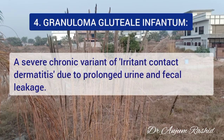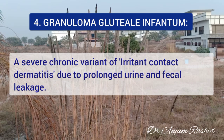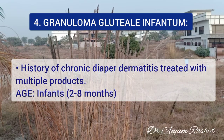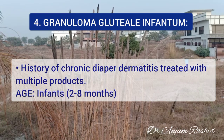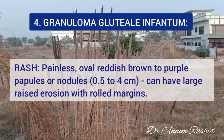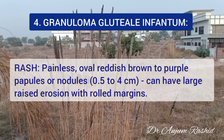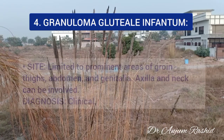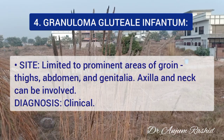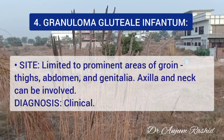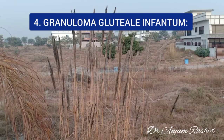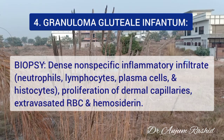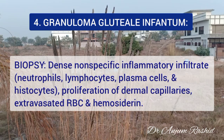The fourth diaper area eruption is granuloma gluteal infantum. It is a severe chronic variant of irritant contact dermatitis due to prolonged and chronic urine and fecal leakage, with history of chronic diaper dermatitis treated with multiple products including corticosteroids. Usual age is about 2 to 8 months. The rash consists of painless oval reddish-brown to purple papules or nodules, about 0.5 to 4 cm in diameter, and can have large raised erosions with rolled margins. The rash is limited to prominent areas of groin, thighs, abdomen, and genitalia; axilla and neck can also be involved. Biopsy shows dense non-specific inflammatory infiltrate consisting of neutrophils, lymphocytes, plasma cells, and histiocytes, with proliferation of dermal capillaries, extravasated RBCs, and hemosiderin.